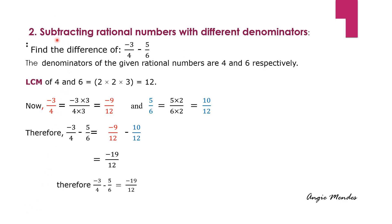The second case is when we need to subtract rational numbers with different denominators. Let us take the example of two rational numbers: minus 3 upon 4 and 5 upon 6. Since the denominators are different, we need to take the LCM of the denominators. Taking the LCM of 4 and 6, we get 12. We take the first rational number, minus 3 upon 4, and multiply the denominator by the number that gives us 12. We multiply 4 by 3, and since we multiplied the denominator by 3, we also multiply the numerator by 3. So we get a new rational number: minus 9 upon 12.